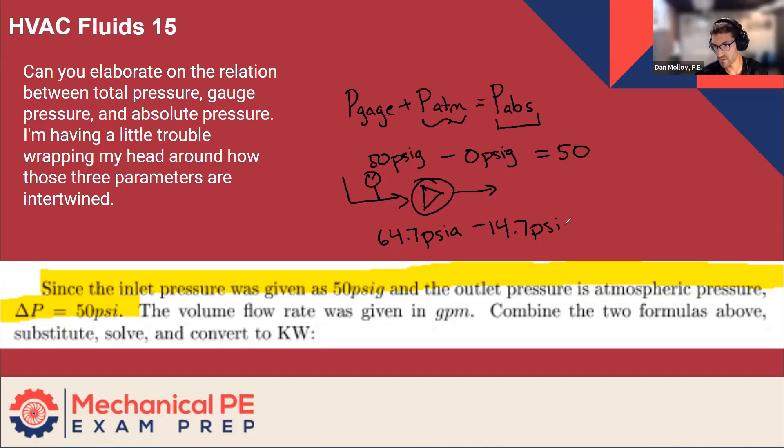Then the atmospheric pressure is 14.7 psi a. And so what's the difference? Still 50, 50 psi. And we no longer have to specify that it's gauge or absolute, because it's a delta P. So it's just psi. There's no particular reference.